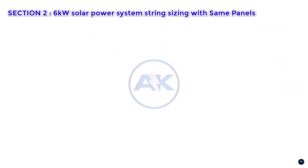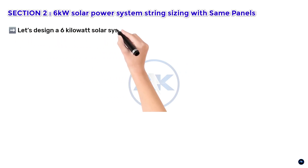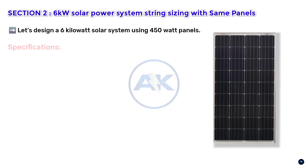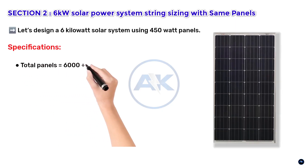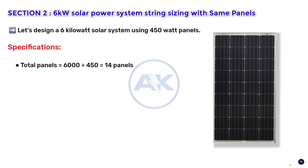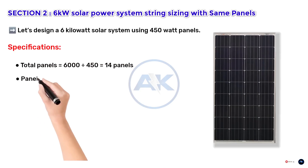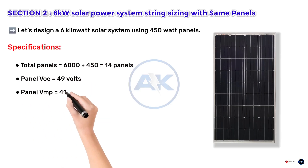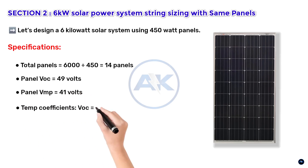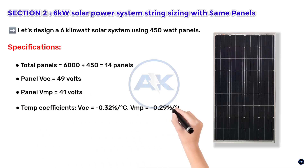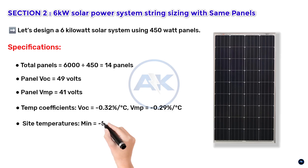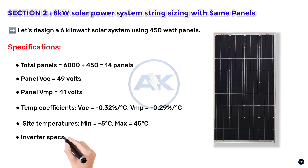Section 2 — 6 kilowatt solar power system string sizing with same-wattage panels. Let's design a 6 kilowatt system using 450-watt panels. Specs: total panels = 6000 ÷ 450 = 14 panels. Panel VOC = 49 V, panel VMP = 41 V. Coefficients: VOC = −0.32%/°C, VMP = −0.29%/°C. Site temps: −5°C to 45°C. Inverter MPPT range: 200–600 V, max DC: 1000 V.